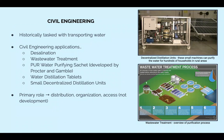In addition to strictly constructing the infrastructure used to transport clean water and wastewater, civil engineering is used in the processes of desalination, agriculture irrigation technology, PUR water purifying sachets developed by P&G, water distillation tablets, and small decentralized distillation units, just to name a few. Although other engineering spheres of expertise are typically in charge of developing these technologies, civil engineers are tasked with distributing them so that populations have equitable access.